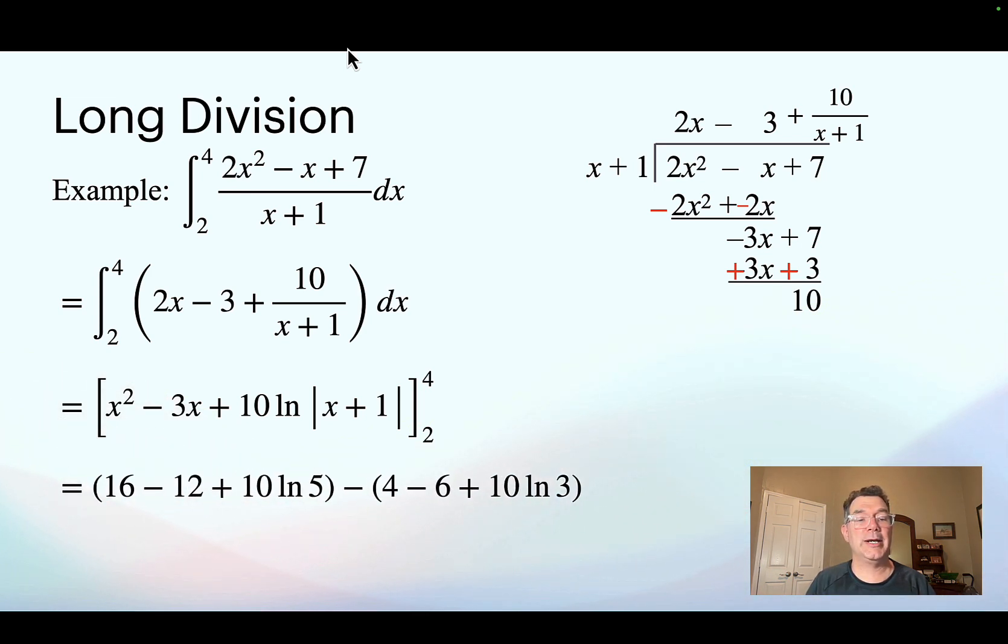If I plug in 4, I'm going to get 16 minus 12 plus 10 times the natural log of 5. And if I plug in 2, I'm going to get 4 minus 6 plus 10 times the natural log of 3. Then with a little bit of algebra and some log rules, that simplifies to be 6 plus 10 times the natural log of 5 thirds.